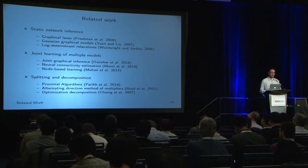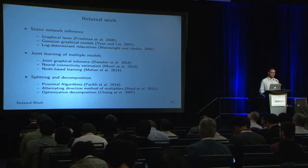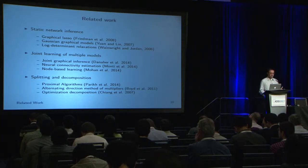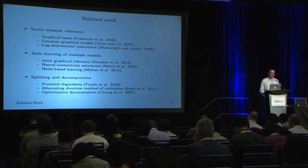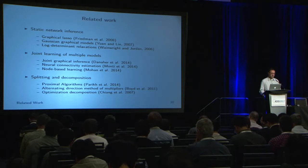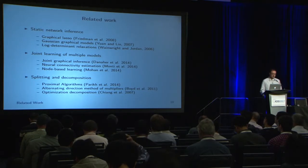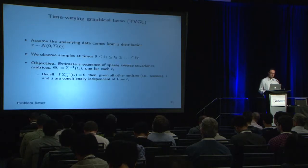In terms of related work, learning static networks from raw data has been well studied — notably the graphical lasso for static network learning — and within network analysis there's work on link prediction related to viral spreading. We leverage ideas from joint learning of multiple models simultaneously. To solve the TVGL problem computationally, we use a splitting and decomposition algorithm based on the alternating direction method of multipliers, or ADMM.